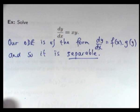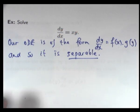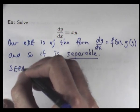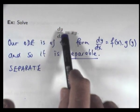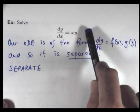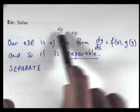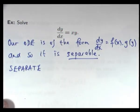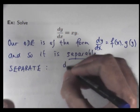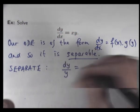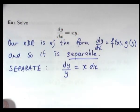We separate the variables in the following way. So, what I'm going to do here, I'm going to bring the dx up to the right-hand side and the y down the bottom to the left-hand side. So, I get something a little like this.